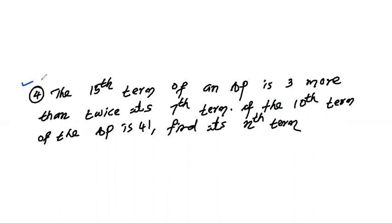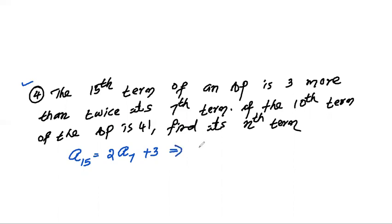Now question number 4: The 15th term of an AP is 3 more than twice its 7th term. If the 10th term is 41, find the nth term. What is given: A15 equals 2 times A7 plus 3. Using the nth term formula, A15 is A plus 14D, and 2 into A7 is 2 into A plus 6D.